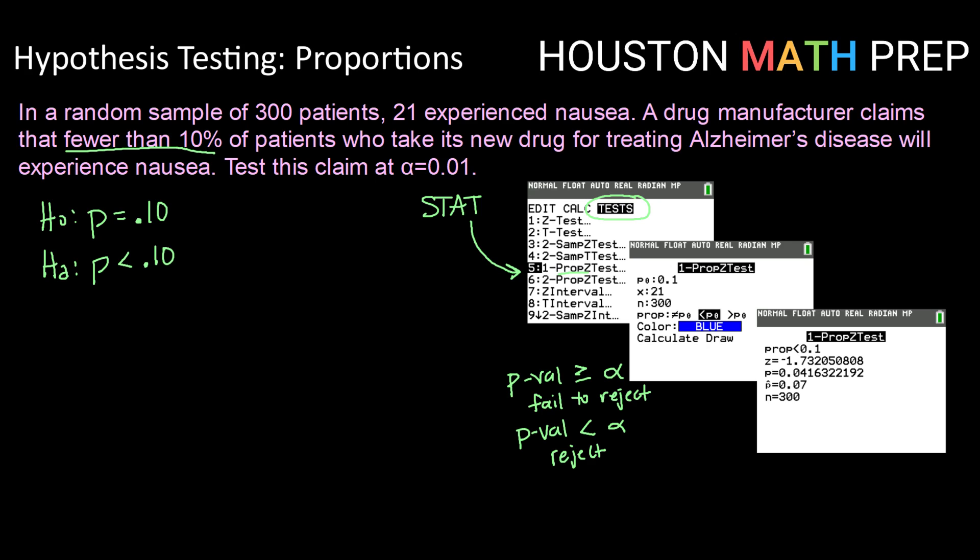Toggling over to that, we see that we need to give certain values. We need to give our p sub 0. That is our value that we have placed in our null hypothesis or 0.1. We need to give our x value or our number of successes. In this case, it was 21 that experienced nausea. We need to give our n or the number in our sample. In this case, that was 300 patients.